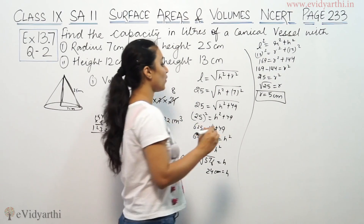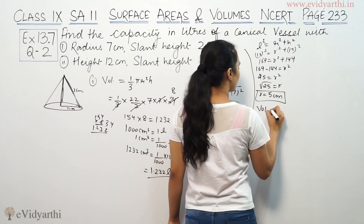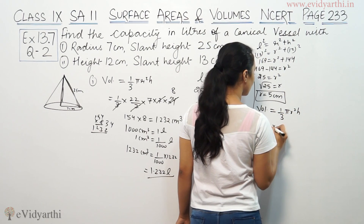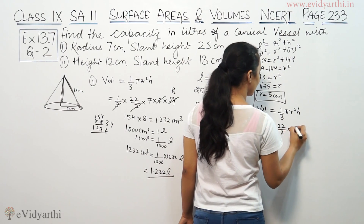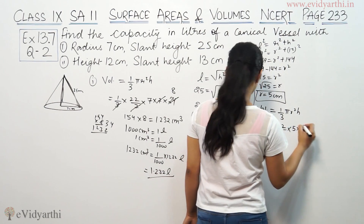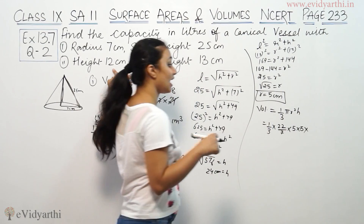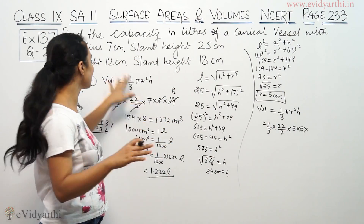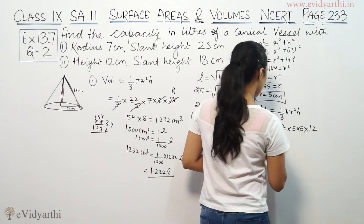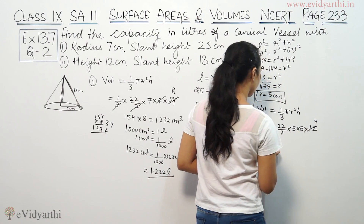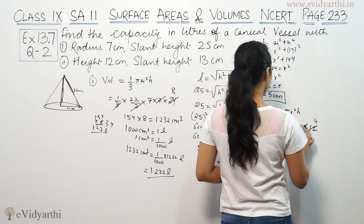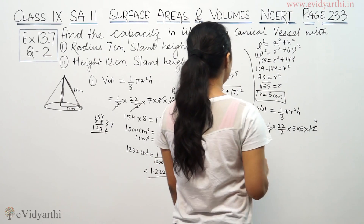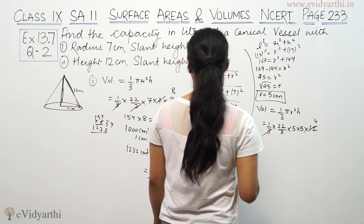Radius is 5 centimeters. Now for the volume. Volume = 1/3 × 22/7 × r² × h. So 1/3 × 22/7 × 5 × 5 × height. Here height is 12 — not slant height. H means height, and height is 12.